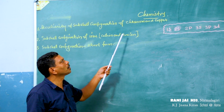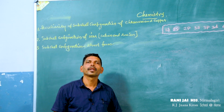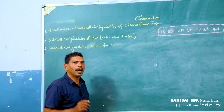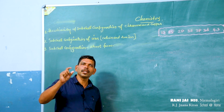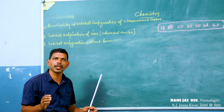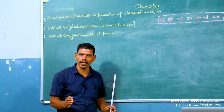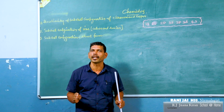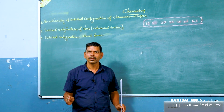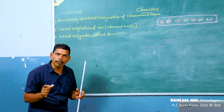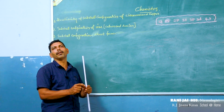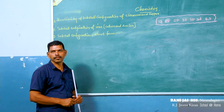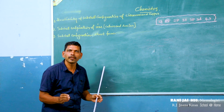Now we can see the peculiarity of subshell electronic configuration of chromium and copper — that means the speciality of their subshell electronic configuration. In the last class we already studied the subshell electronic configuration of various atomic elements. The electrons are filled in various subshells in the order of increasing energy. If we know the atomic number, we can write the subshell electronic configuration order-wise.